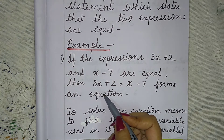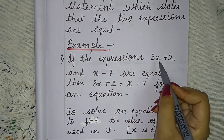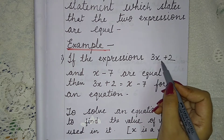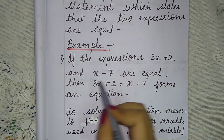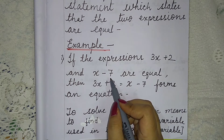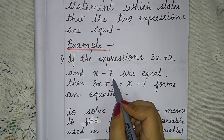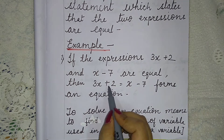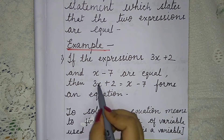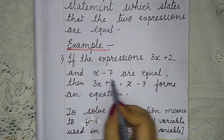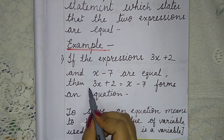Suppose that you are given two expressions: one is 3x plus 2 and one is x minus 7. If these two are equal, then we write 3x plus 2 is equal to x minus 7. This is an equation.